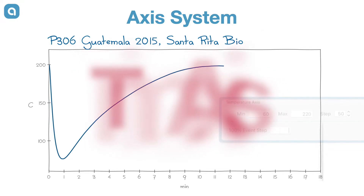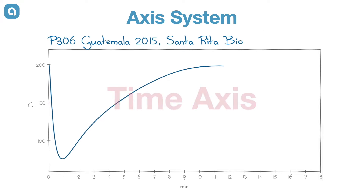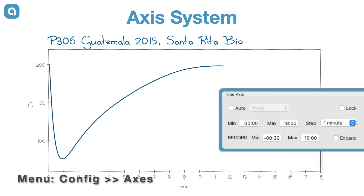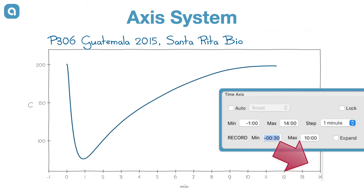Let's turn to the time axis, which is configured in the first section of the axis dialog. Again, we can set the axis limits and the tick labels step size to some reasonable values, but here we have some more options.